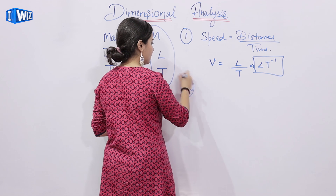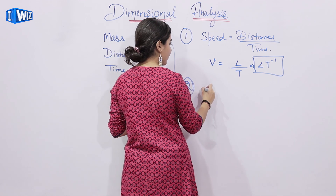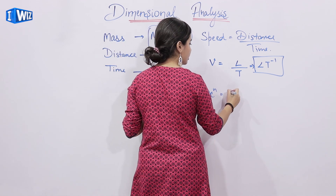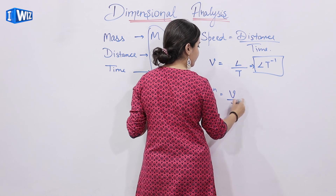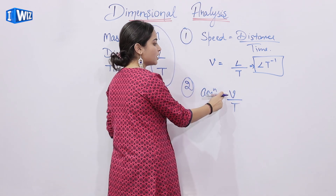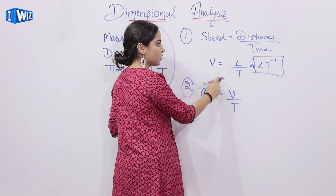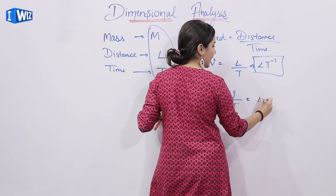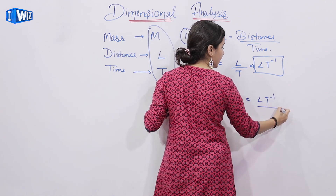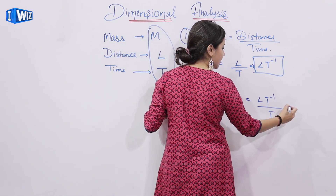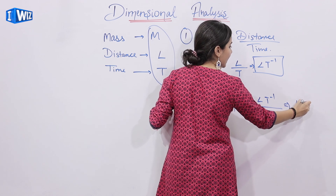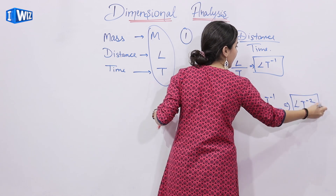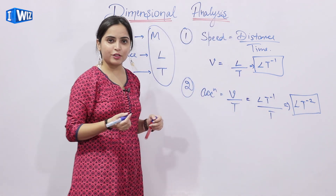Similarly, if we have acceleration, that is equals to velocity upon time. On substituting the dimensions of velocity, that is L T minus 1, upon T, which will give L T minus 2. So this is the dimension of acceleration.